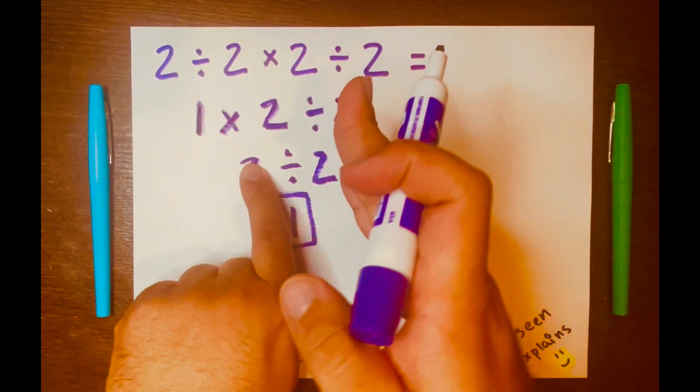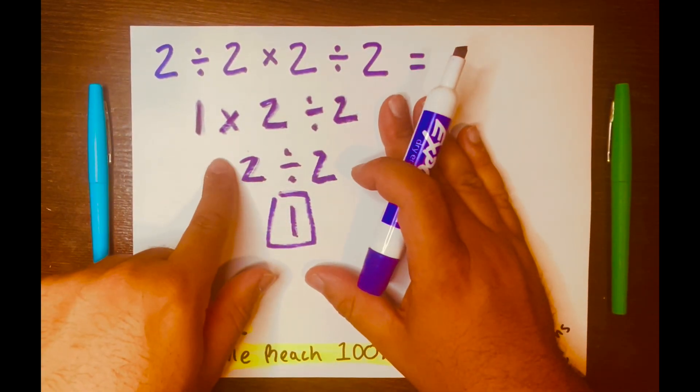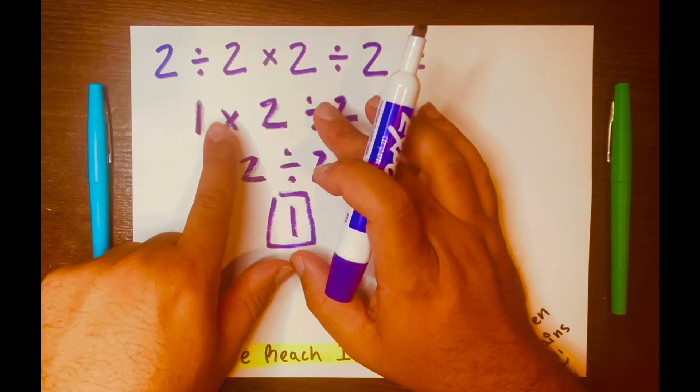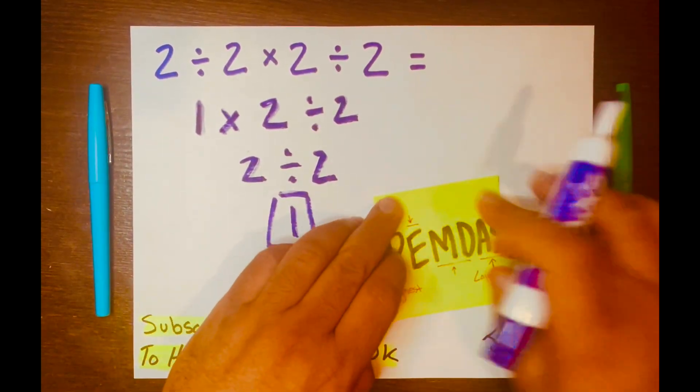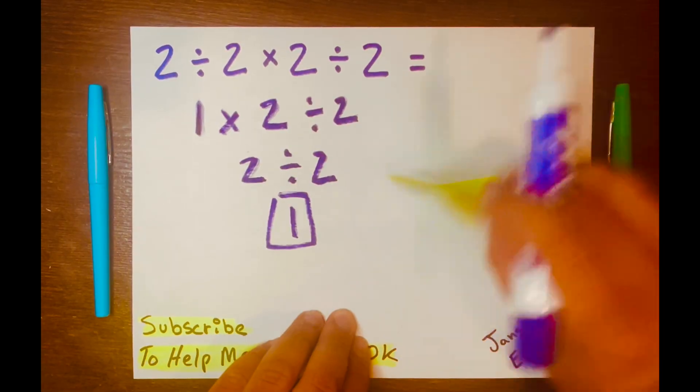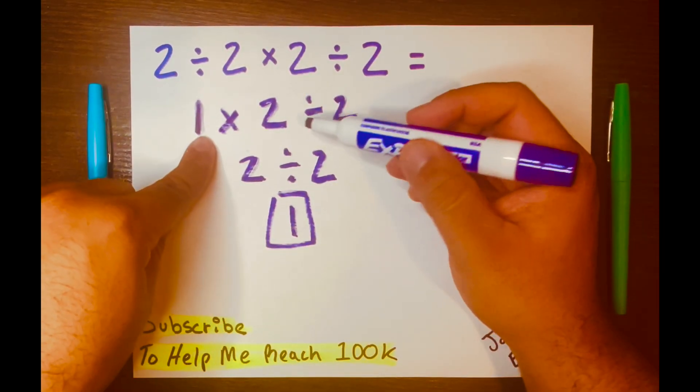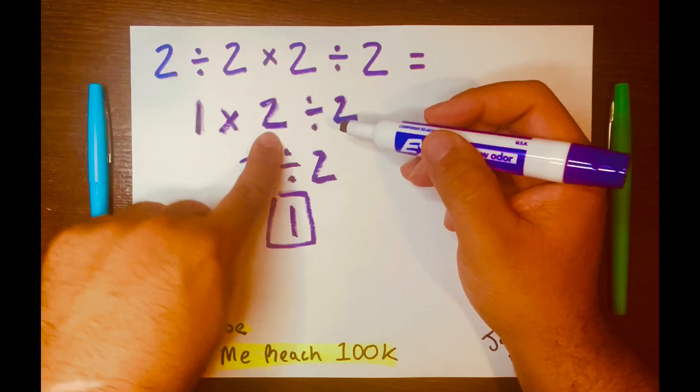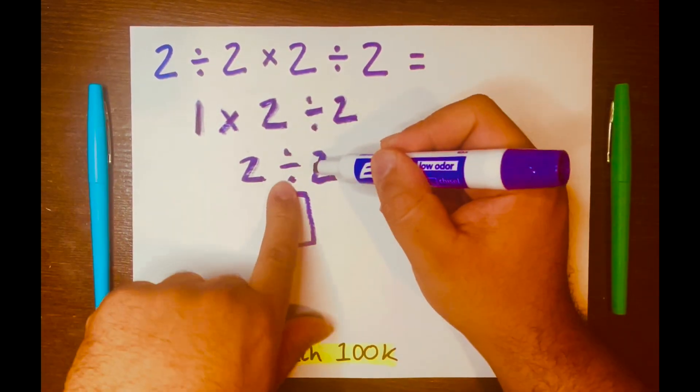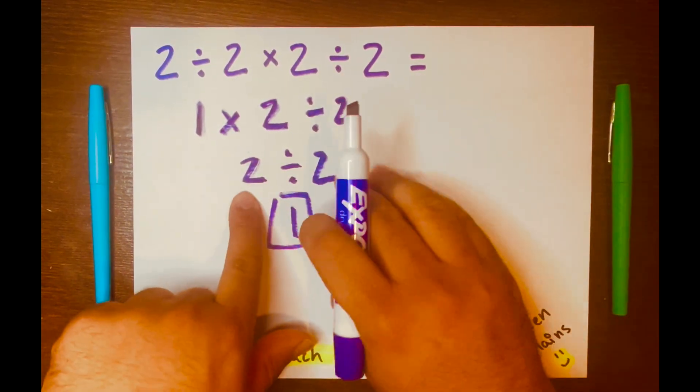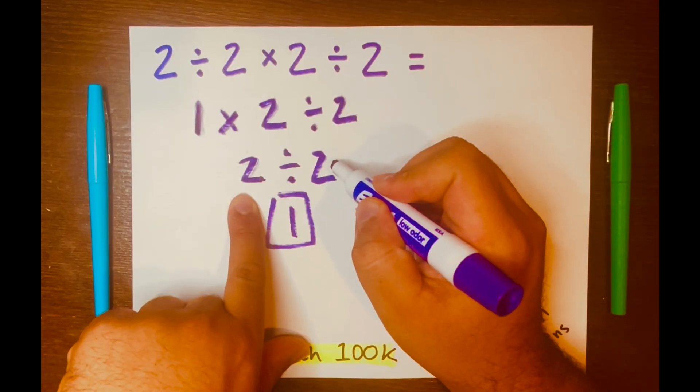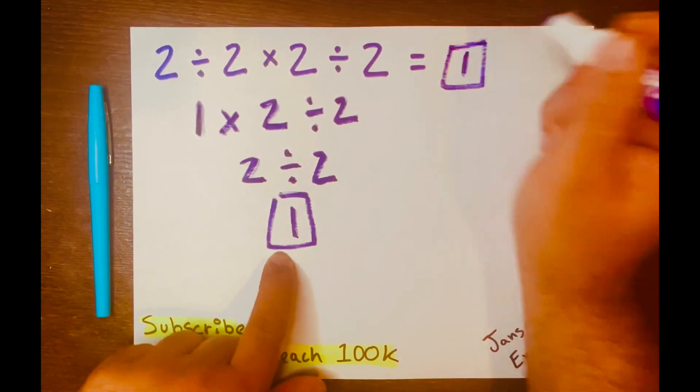And so again, we work from left to right according to its levels. And we know that both of these operations are within this level of PEMDAS. And so 1 times 2 is 2. Bring down the division symbol down. Bring down the 2. And 2 divided by 2 is 1. So your answer is 1.